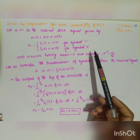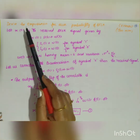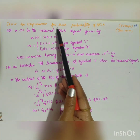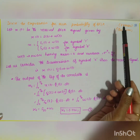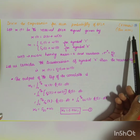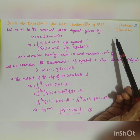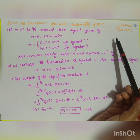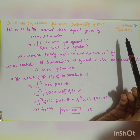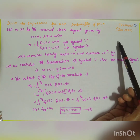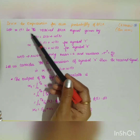The next topic is the probability of error of a BFSK system. One question asked is: derive the expression for error probability of BFSK — worth 8 marks from the January 2020 question paper. The pre-requisite is knowledge of the decision diagram or signal space representation, which was covered in the previous video.